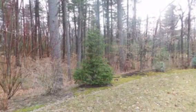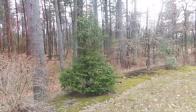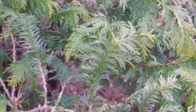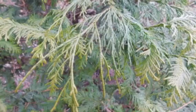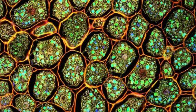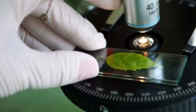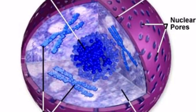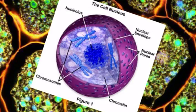A plant cell is a structured and functional unit for all plant organisms. There are millions of cells in an organism. A plant cell is extremely small, visible only on a microscope. A plant cell is a eukaryotic cell — cells with a well-defined nucleus.